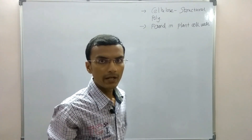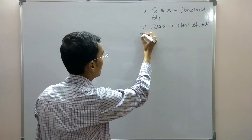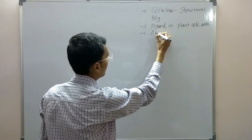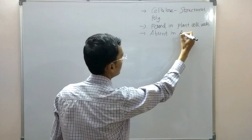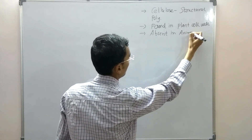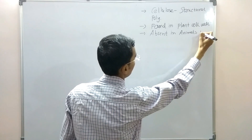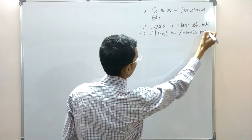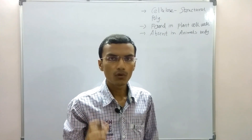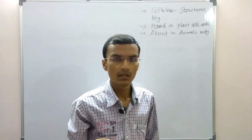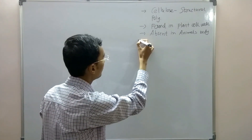Cellulose is absent in the animal body — it is not found in animals. It is the most abundant polysaccharide on earth.